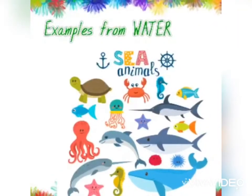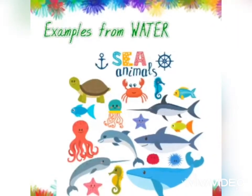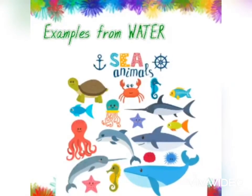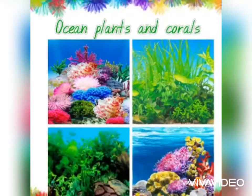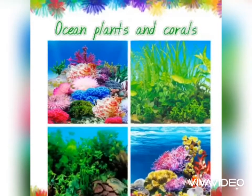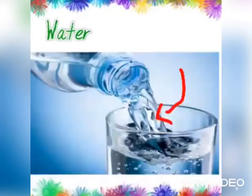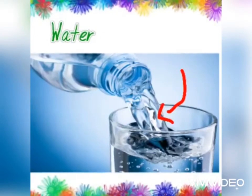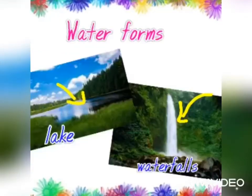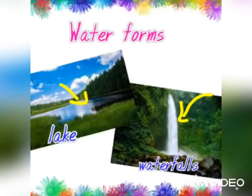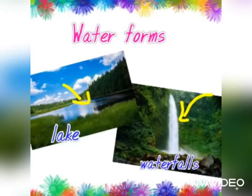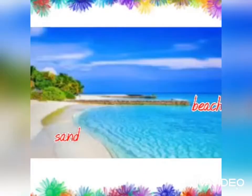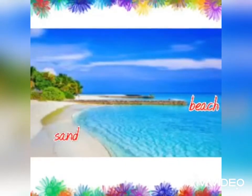Examples from water include sea animals like crabs, sea horse, and fish. Ocean plants and corals too are natural materials. Water for drinking, water forms like lakes and waterfalls, and even sandy beach.